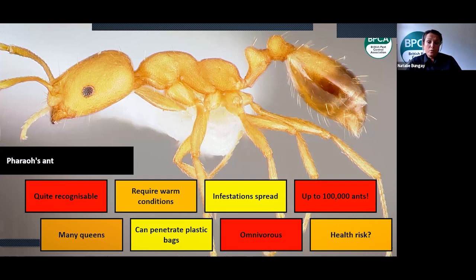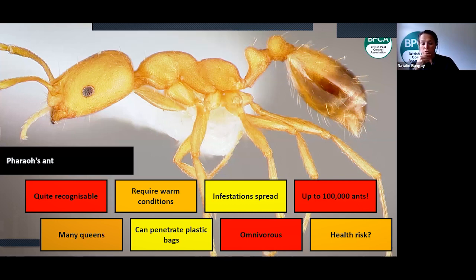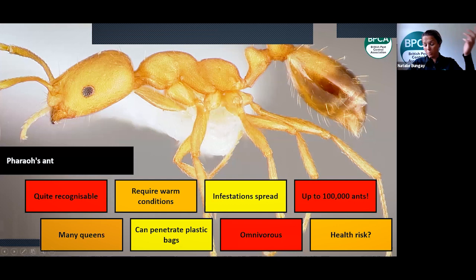Pharaoh's ants are omnivorous — they'll feed on meat, cheese, fats, sugary substances and honey. In hospitals they also feed on blood, intravenous fluids, wound fluids, and vomit. They pose a real public health risk because pathogenic organisms can be transmitted mechanically as the ants feed in unhygienic places such as drains, refuse, bins, and wounds, potentially spreading contamination through their movement. They also pose a food safety risk by contaminating food in production environments.